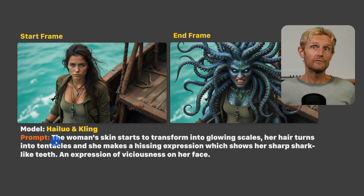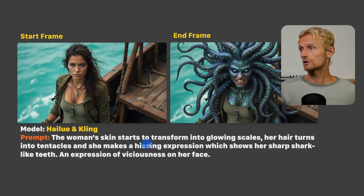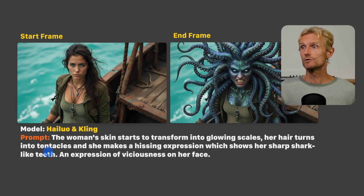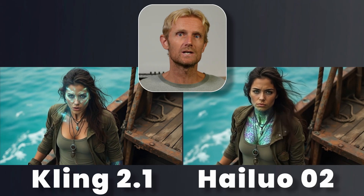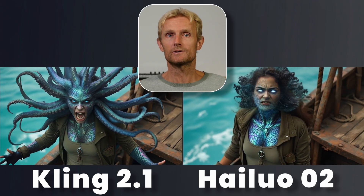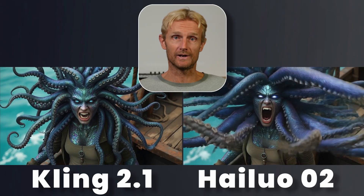The key to creating great visual effects is knowing which tool to use. For this shot I used the start-to-end frame tool in both Kling and Iluo with the prompt: 'the woman's skin starts to transform into glowing scales, her hair turns into tentacles and she makes a hissing expression.' Comparing the Kling and Iluo videos side by side, the Iluo version turned out best, so I chose it to connect with the next effect.